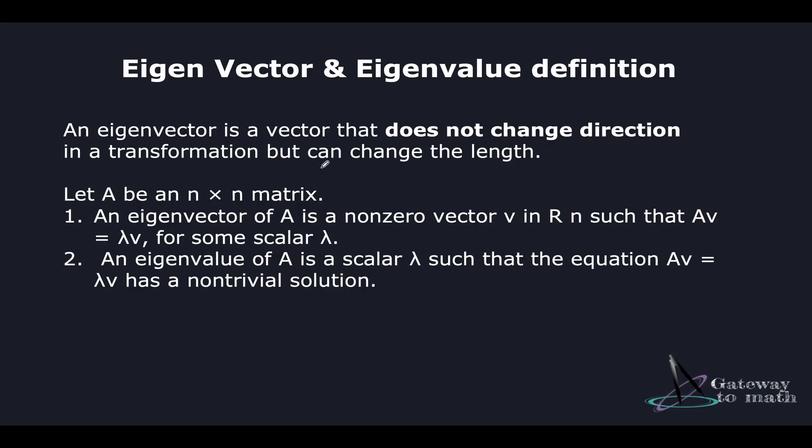So let's look at the definition real quick. An eigenvector is a vector that does not change direction in a transformation but can change the length. So in a transformation, that is when you apply a function to this vector, it's only changing the length but it's not changing the direction. Let A be an n cross n matrix. An eigenvector of A is a nonzero vector V in Rn such that Av equals lambda V for some scalar lambda. We've already seen this equation. So A is my transformation function here. V is my eigenvector when it has been passed to this transformation function. You get back the vector in that direction is still the same. However, the magnitude has been changed with the scalar value lambda.